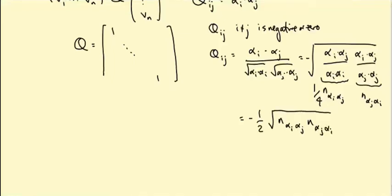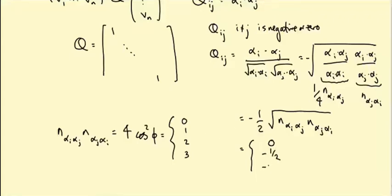Where these Ns are integers. And in fact, I proved something about precisely this quantity here. N alpha I alpha J alpha I was equal to four cos squared phi, where phi is the angle between alpha I alpha J. So this was one of four possible things. This was either zero, one, two, or three. We proved this in an earlier video. So the off diagonal entries of Q IJ are either zero, or minus a half, or what's this going to be square root two over two, or minus square root three over two. And those are the only possibilities.